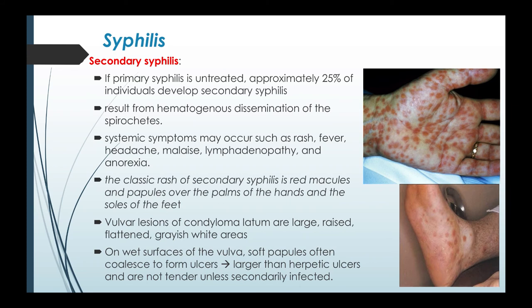For secondary syphilis, if primary syphilis was left untreated, approximately 25 percent of women develop secondary syphilis. This results from hematogenous dissemination of the spirochetes. Systemic symptoms may occur such as rashes, fever, headache, malaise, lymphadenopathy, and anorexia. The classic rash of secondary syphilis consists of red macules and papules over the palms of the hands or over the soles of the feet. Vulvar lesions of condylomata lata are large raised flattened grayish-white areas. On wet surfaces of the vulva, soft papules often coalesce to form ulcers larger than herpetic ulcers and not tender unless secondarily infected.